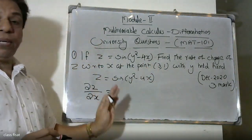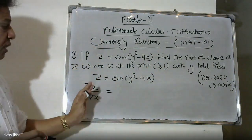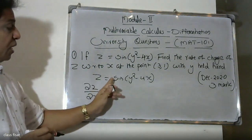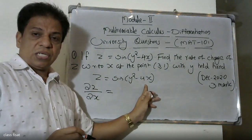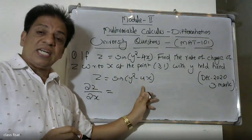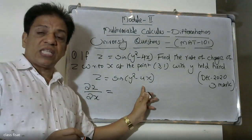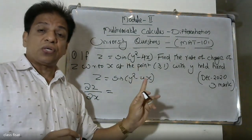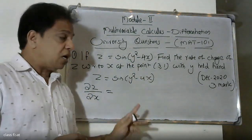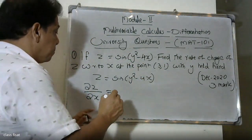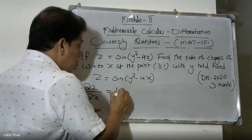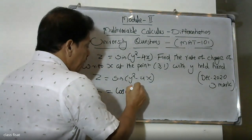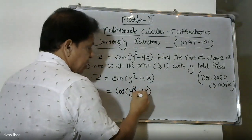We have dou Z by dou x = dou/dou x of sine(y-squared minus 4x). Using the chain rule, the derivative of sine theta is cos theta, giving us cos(y-squared minus 4x).